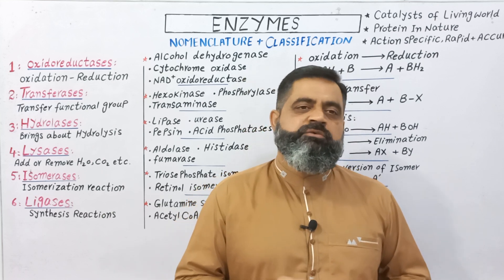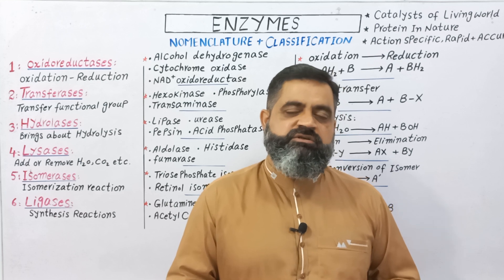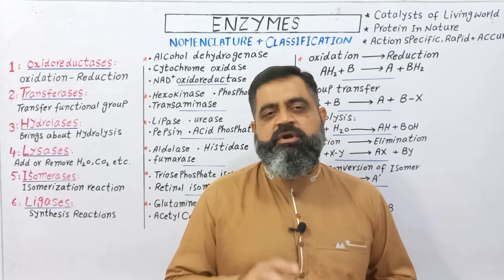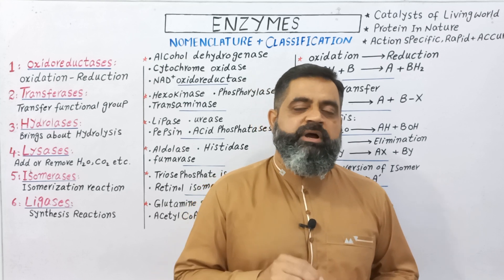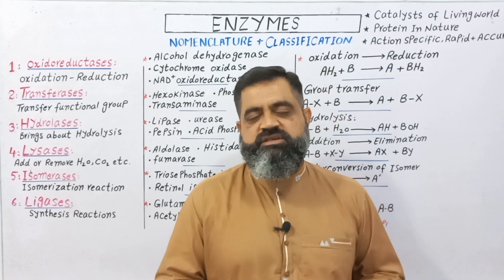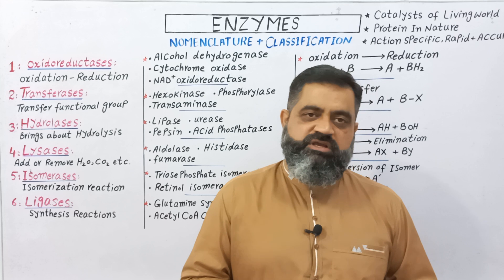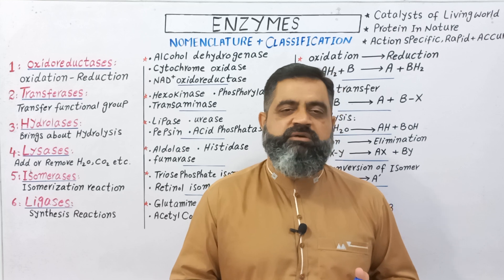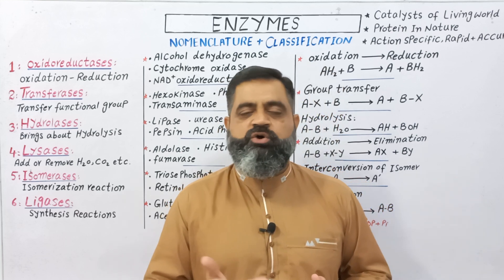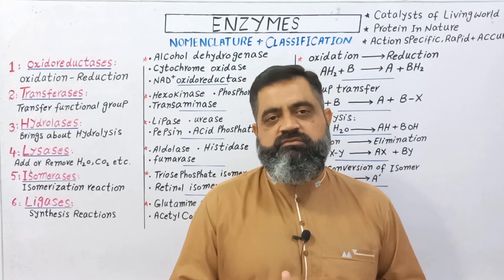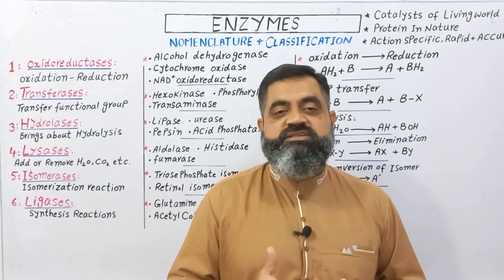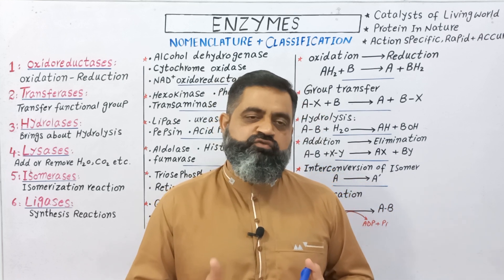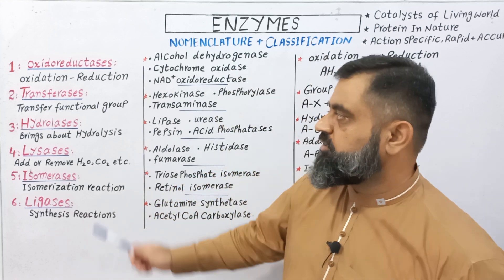Regarding nomenclature: in earlier times, enzymes were named by their location, like pepsin, trypsin, and chymotrypsin. Nowadays they are named by adding the suffix '-ase' at the end of the name, depending on the nature of the substrate, the chemical reaction, or the location. For example, the enzyme which breaks down urea is known as urease, and the enzyme which breaks down cellulose is known as cellulase.